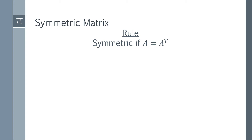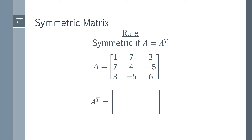The rule for a symmetric matrix is it's symmetric if A equals A transpose. So we have a matrix A and if we find the transpose, A transpose, by turning the rows into columns — the first row becomes a column, the second row becomes a column, and the third row becomes a column. You can immediately see by comparing A and A transpose that taking the transpose hasn't actually changed the matrix at all. The two are exactly equal, so therefore you have a symmetric matrix.